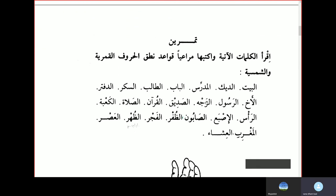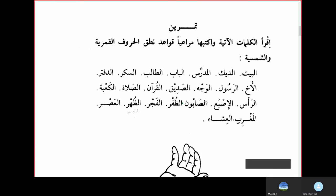Al-Tamreen — exercise. Iqra'il-kalimaat al-athiyata — read the following words, and write them, keeping in mind the rules of pronunciation of the Lunar Letters and Solar Letters.